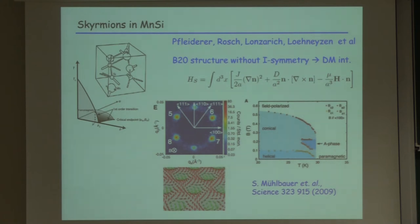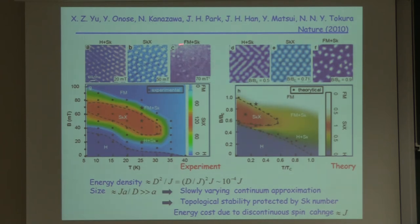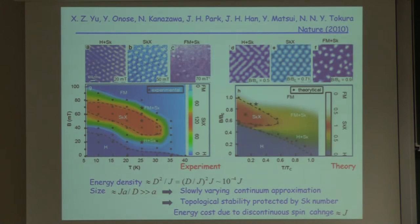After this seminal work, we succeeded in observing skyrmions by Lorentz TEM. Dr. Wu invented a very ingenious method to apply the magnetic field in the Lorentz TEM. She observed this crystal structure and also the gas state of skyrmions. This is very important since the skyrmion is regarded as emergent particles, even without the crystal structure.